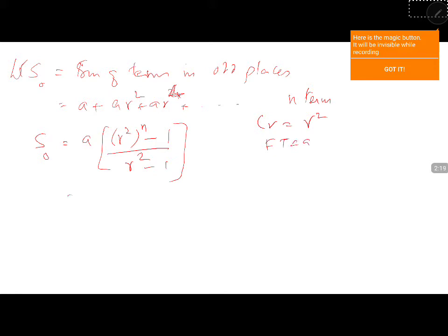So this will be a(r^(2n) - 1)/(r² - 1). This is SO.